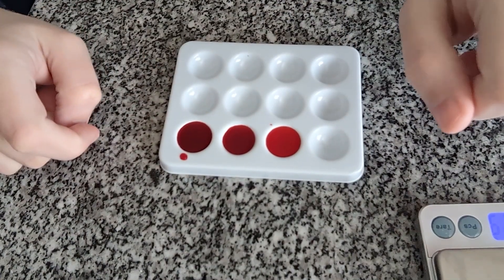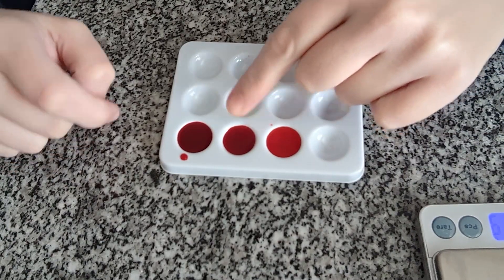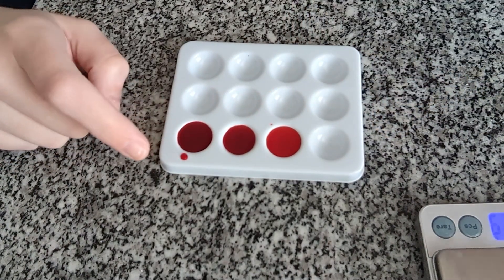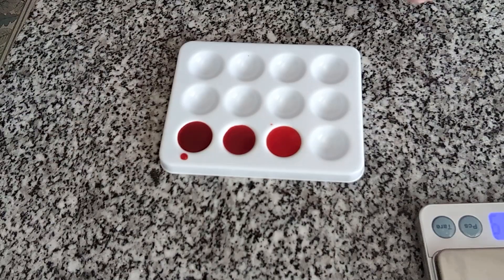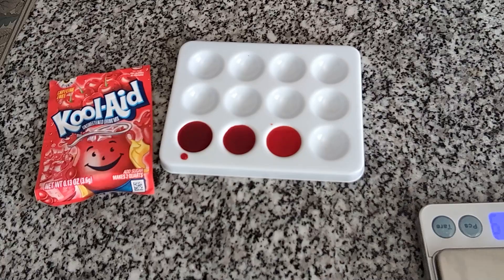Okay, right here you can see the three samples side by side. This is the 0.25, that is the 0.5, and that is the one. Again, I promise this is Kool-Aid. Maybe we should put that side by side so you can see.